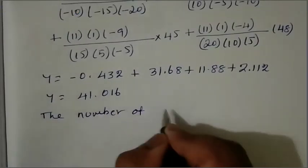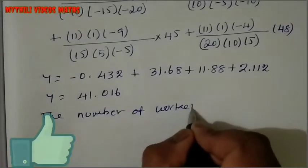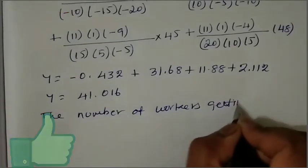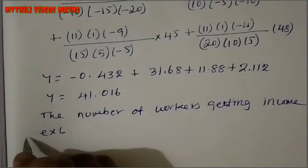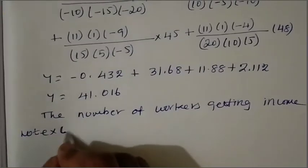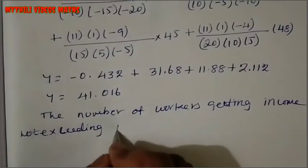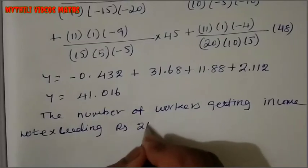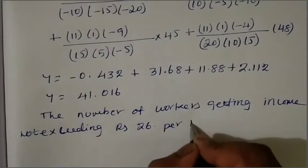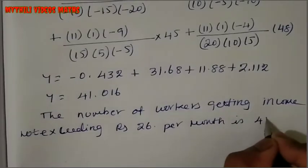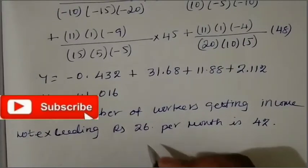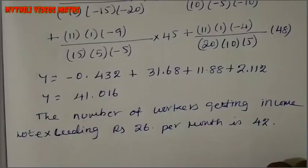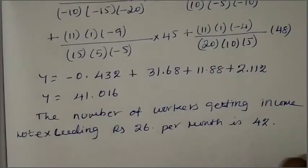So the number of workers getting income not exceeding rupees 26 per month is 42 workers. That is the final answer. Please like, share, and subscribe. Thank you.